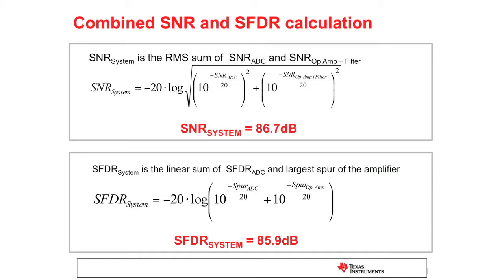whereas the datasheet for the ADC listed as 87 dB, and the SFDR adds a linear sum, which is 85.9, and the datasheet is listed as 86.